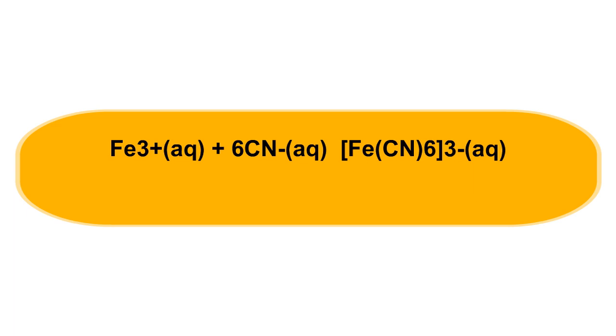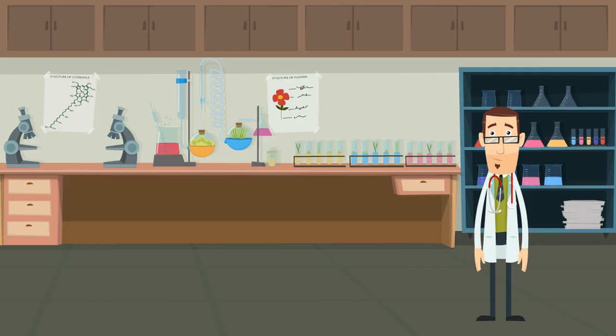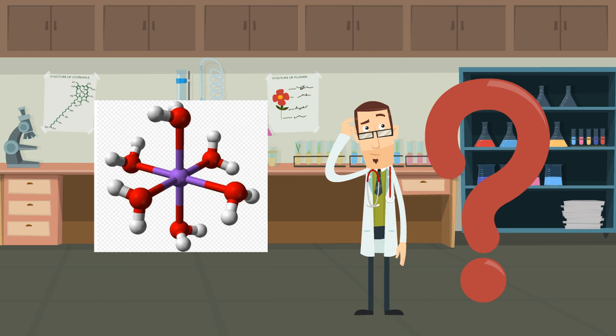Here, we can see this lone pair of electrons can be donated to Fe3+, to generate a new complex. After talking about the basics of coordination, it's now time to talk about ligand. What is a ligand and how can we identify it?